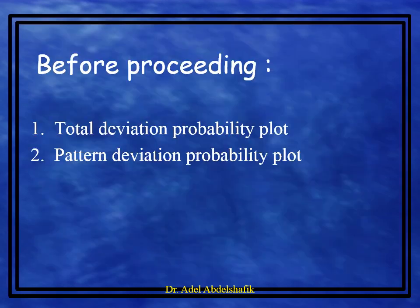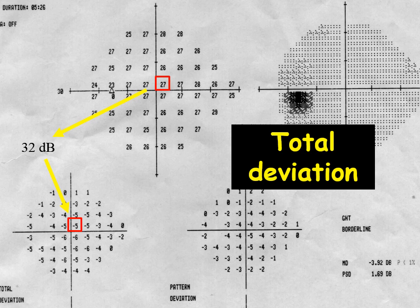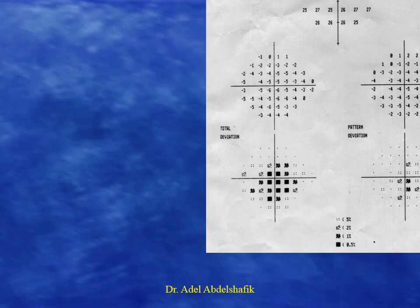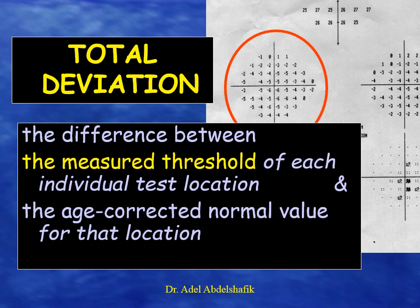Before proceeding, I need to remind you about the total deviation and the pattern deviation. The total deviation shows patient data recorded, where each location is compared with the normative data for that age, and any difference is shown. So this point is below average by 5, while this point is better than average by 1, and this point is the same as the average normal age. The total deviation is the difference between the measured threshold of each individual test location and the age-corrected normal value for that location.